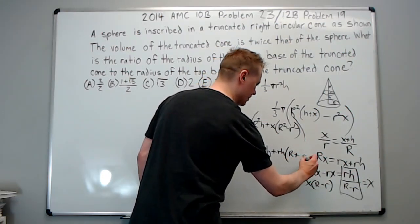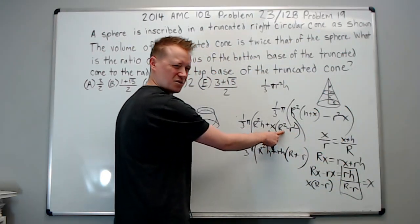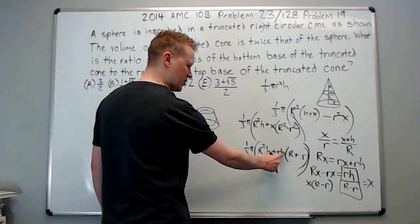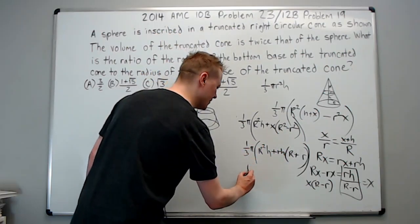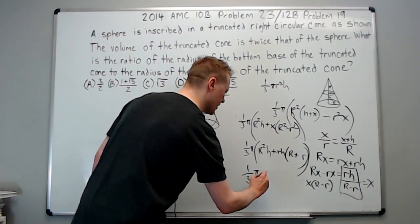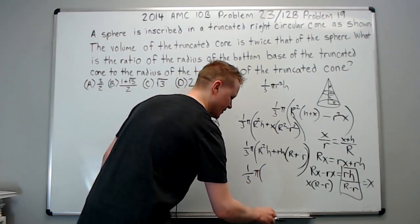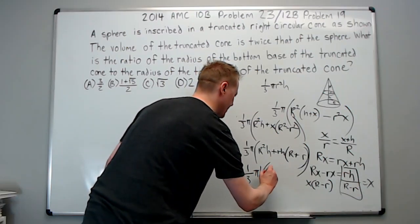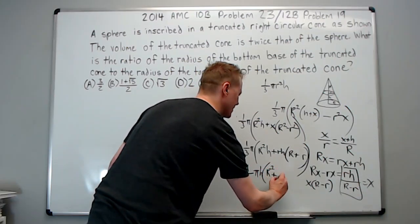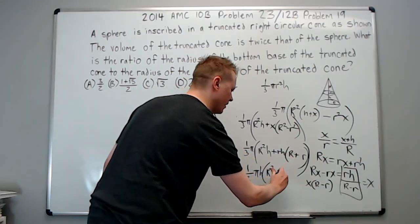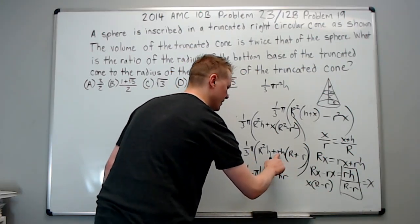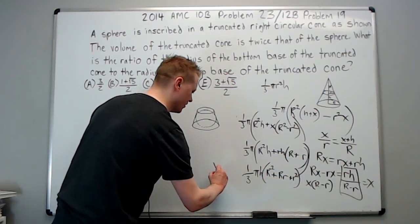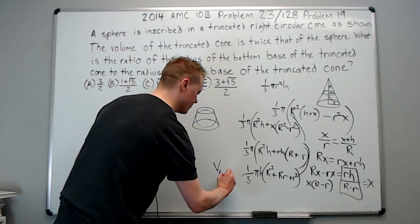Because the R minus r cancels the R minus r here, right? Hopefully you're following. There's an h here and an h here. We'll factor it out to get the final formula for a frustum. Which is, oh I forgot the h. So put the h here and we get R squared plus, this h is gone. R times big R and r times little r. So there we've done it. This is the volume of a frustum.